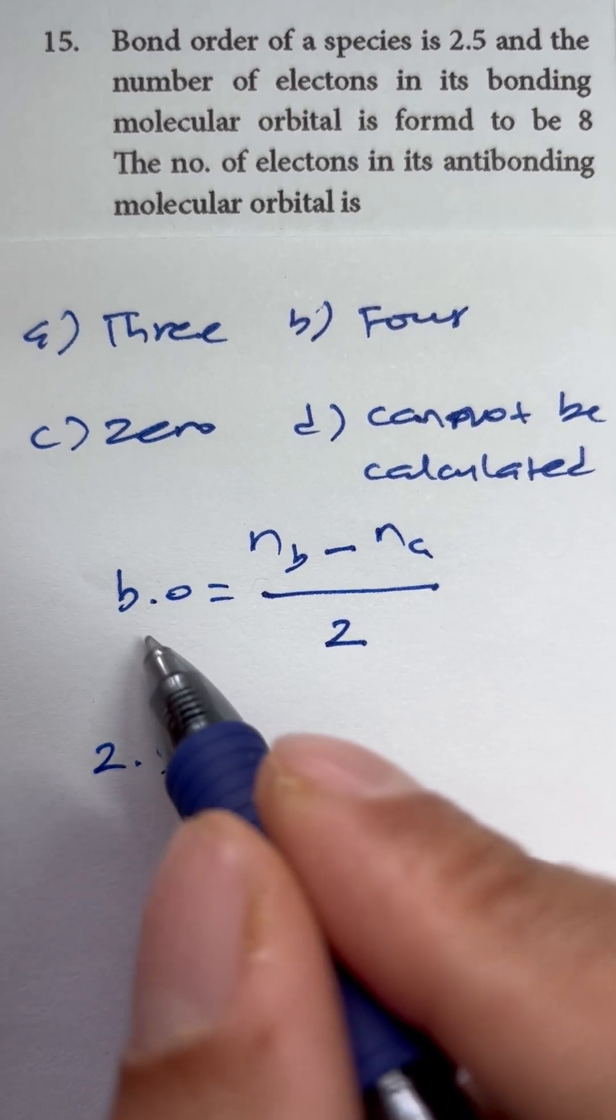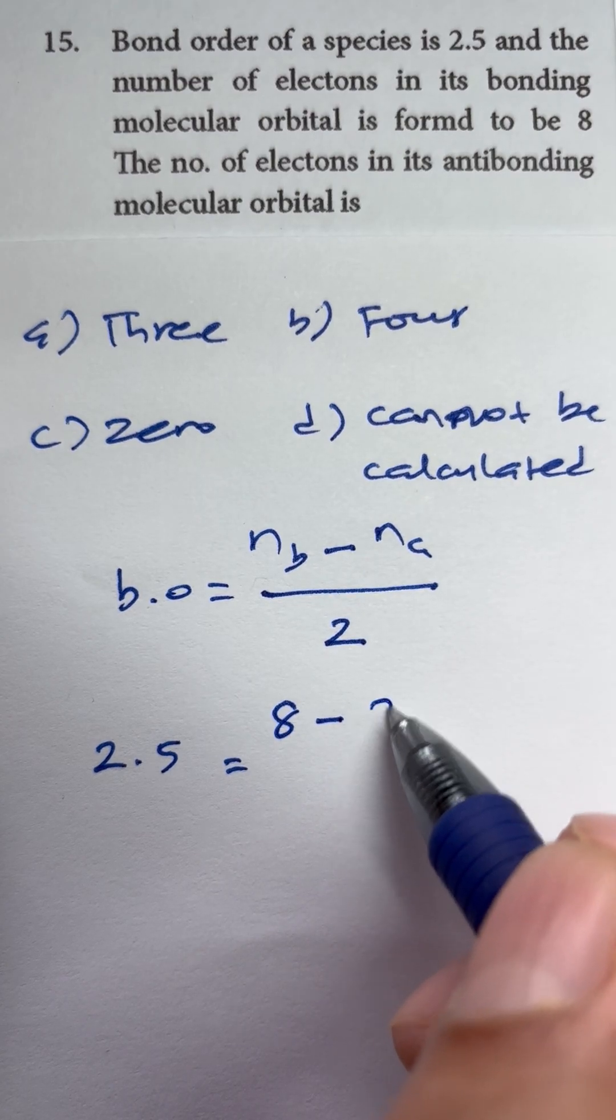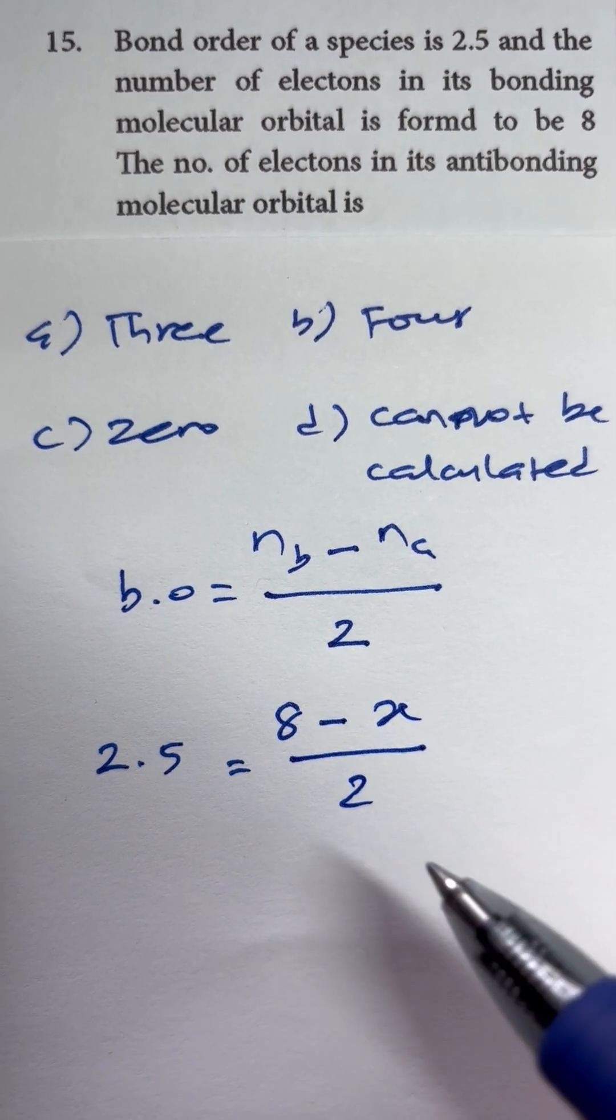2.5 that is given, 8 that is also given, NA we need to find out, divided by 2.